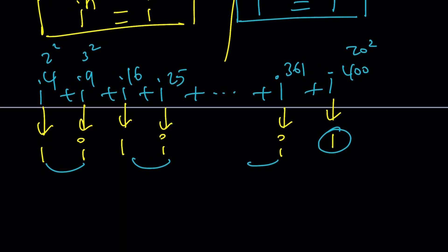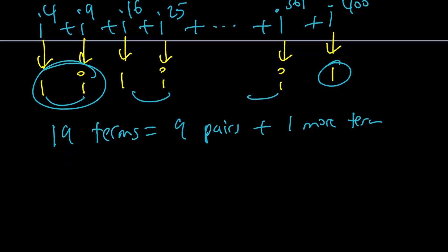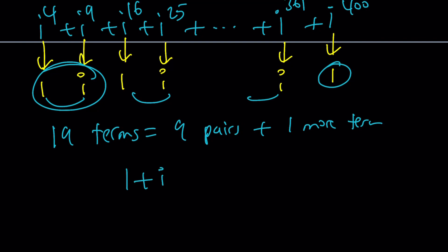So since we have 19 terms, 19 terms means 9 pairs plus 1 more term, right? And 9 pairs, each pair adds up to 1 plus i. So we're going to have 1 plus i times 9 plus the last term adds up to 1.